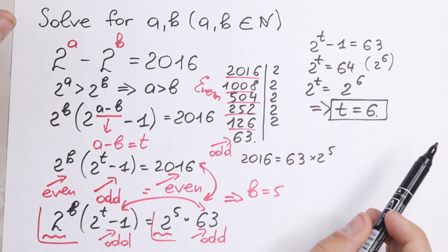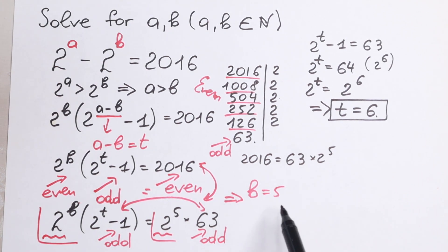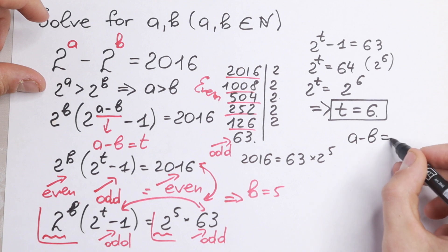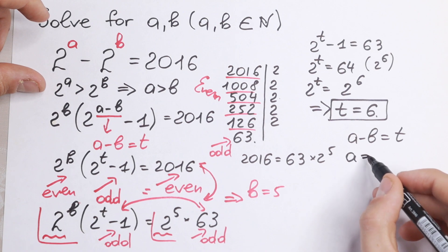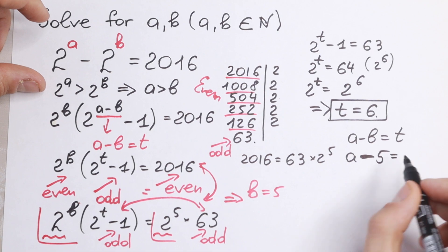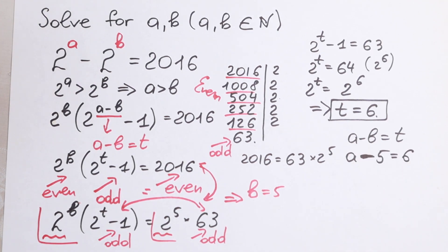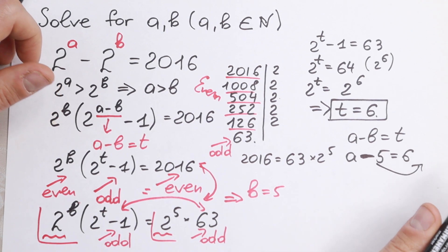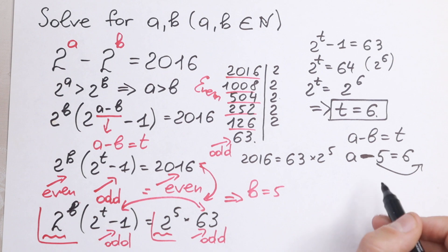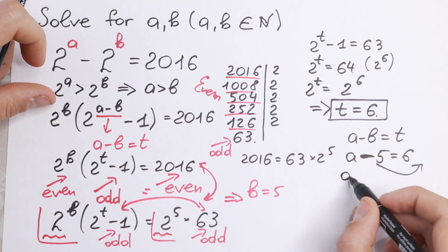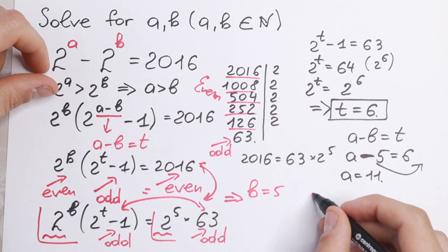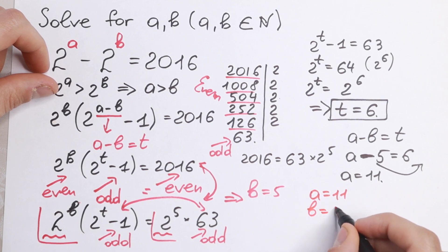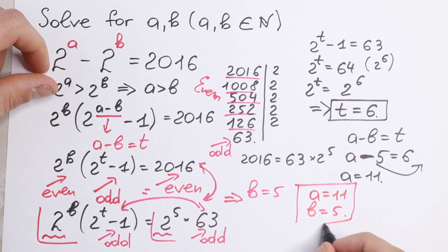We don't need T directly — we need A and B. We know B equals 5. Using our substitution A minus B equals T, so A minus 5 equals 6, which gives A equals 11. So our pair of solutions is A equals 11 and B equals 5.